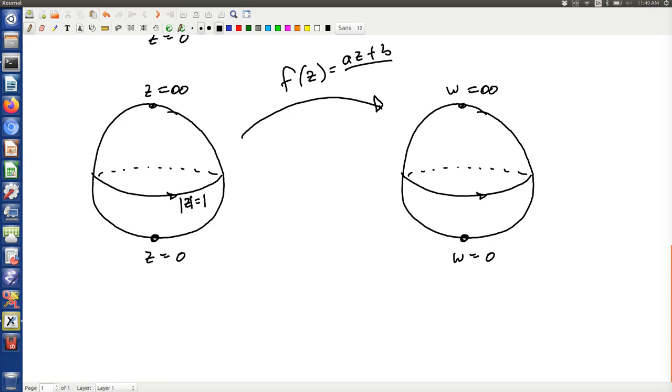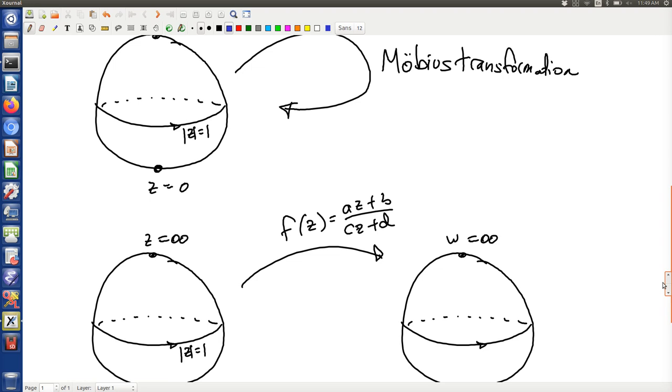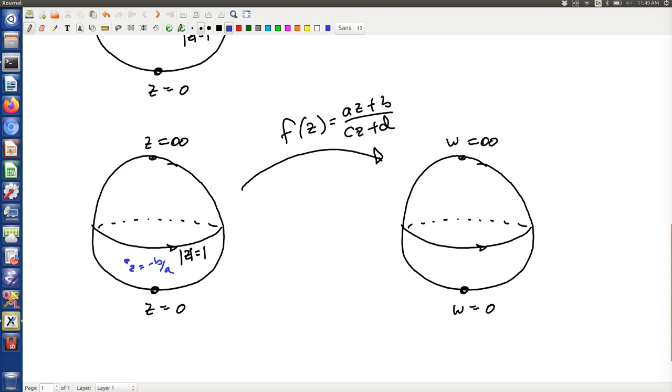So when I map to the zero, the zero is right here. When z equals negative b over a, f(z) equals zero. So wherever that is, that's the zero. That point gets mapped to the south pole.